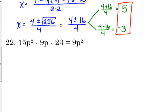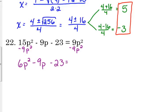For number 22, we have quadratic terms on both sides, so we start by moving the 9p squared over. 15 minus 9 gives 6p squared, minus 9p, minus 23. The number 6 is not a GCF and you're not going to find anything that makes this factorable. So let's apply the quadratic formula: a is 6, b is negative 9, c is negative 23.